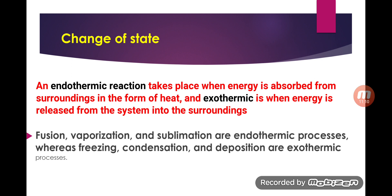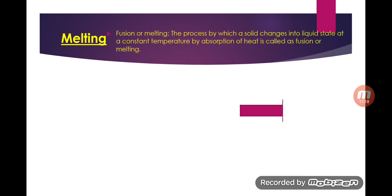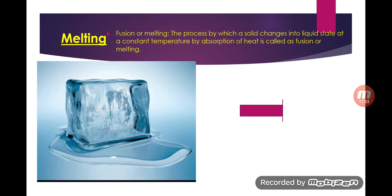Melting, or fusion, is the process by which a solid changes into a liquid state at a constant temperature by absorption of heat — that is called fusion. The melting point is the temperature at which a solid starts melting. Ice starts melting and converts into liquid form — that is an example of melting: solid changes into liquid.